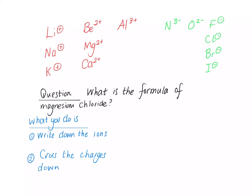And here's a typical question. What is the formula of magnesium chloride? So what you do is write down the ions that make up magnesium chloride. So we know that the formula of a magnesium ion is Mg2+, and we know that the formula of a chloride ion is Cl-.